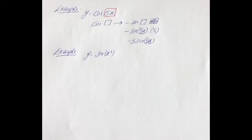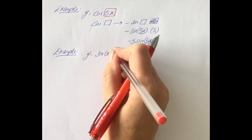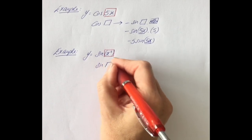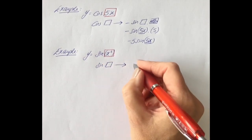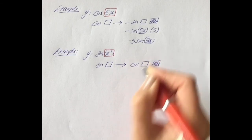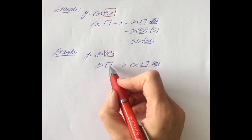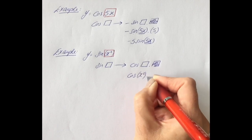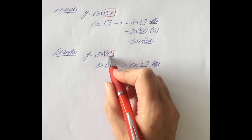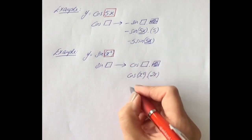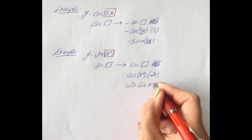Let's try y = sin(x²). We have something more complicated than just an X, so we chain rule it. Sine of something differentiates to cos of that something times the differential of that something. In this case we have x² in the box, so it differentiates to cos(x²) times the differential of x², which is 2x. That tidies up to 2x cos(x²).